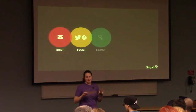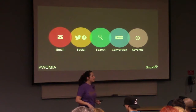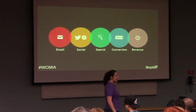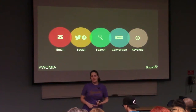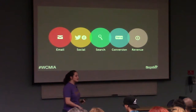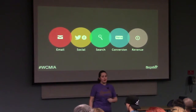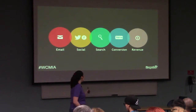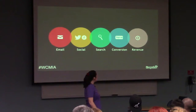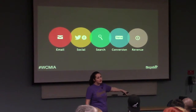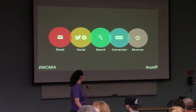I'll take questions at the end because I have a lot of information to cover. When you're looking at a marketing plan, the components include an email plan, a social media plan, a search engine optimization plan, a conversion rate optimization plan, and a revenue optimization plan. Today we're going to cover the search portion and touch on how that flows into your conversion and revenue plan, with heavy focus on the local aspect.